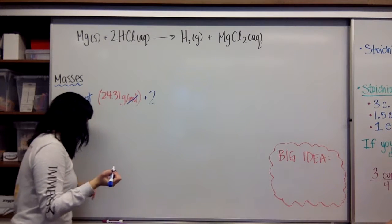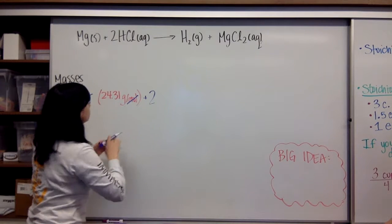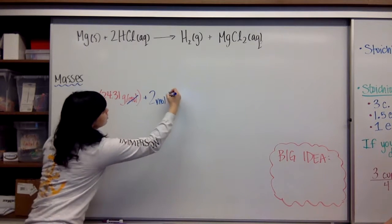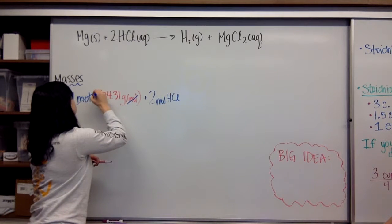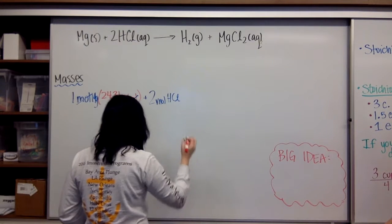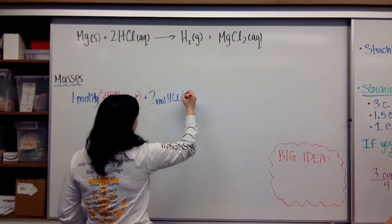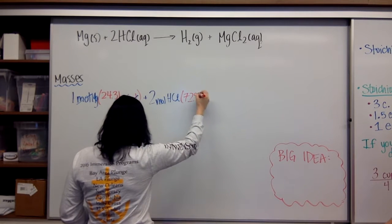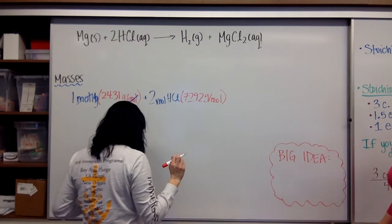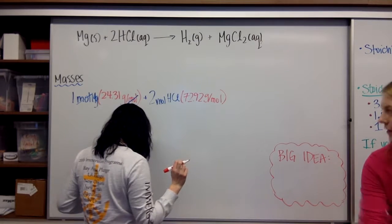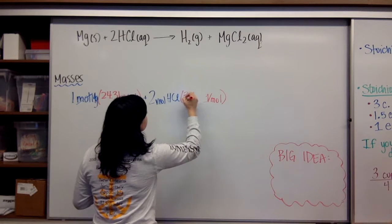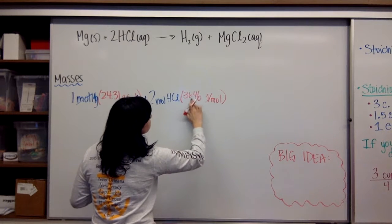So, we will go ahead and continue writing this. Plus, I have two whole moles, remember, of my hydrochloric acid, which is 72, two moles. Two moles of HCl. That's your Mg right there, guys. Two moles of HCl. It's going to equal 72.92 grams per mole. Remember, molar mass, periodic table. 36.46. 36.46 grams per mole.